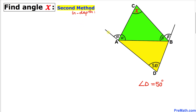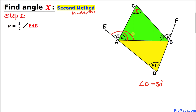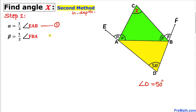Let me give names to these extended lines. The line AD extends to a point I will call point E, and the other extended point I will call point F. Here is our first step: angle alpha is equal to one half of angle EAB — call this equation 1. Likewise, angle beta is equal to one half of angle FBA — call this equation 2.